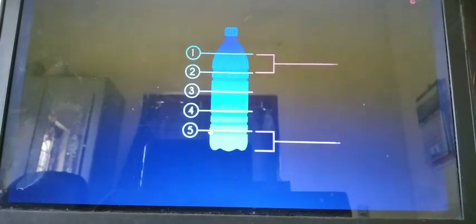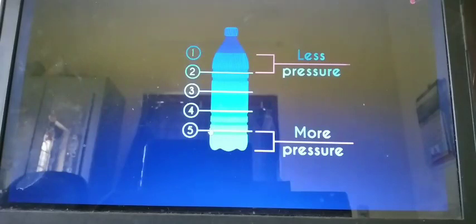We can also derive something interesting if we look at the fluid in terms of layers. Say there is water kept in a plastic container. Let's divide the fluid into 5 equal parts. You can see that the second layer of water is holding the weight of the first layer. Similarly, the third layer is holding the weight of the first as well as the second layer. And the fourth layer is holding the weight of the top 3 layers and so on and so forth. So clearly, the pressure at the bottom most layer is the maximum.